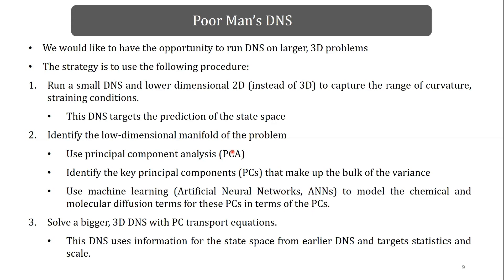Because it's a linear transformation, the governing equations for principal components are very similar to the governing equations for species. Using the same code, you can do principal component transport. We use artificial neural networks to develop models for reaction rates of principal components and their transport properties, such as diffusion coefficients. Once we have the closure model for all transport quantities for the principal components, we run a 3D DNS with principal components, and can recover all species and temperature at any point in the evolution.